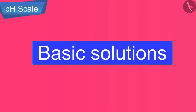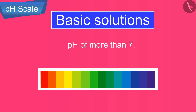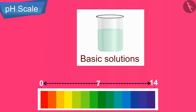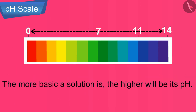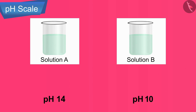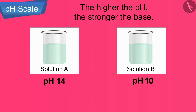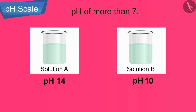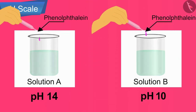Basic solutions have a pH of more than 7. For example, a solution of pH 11 is basic in nature. The more basic a solution is, the higher its pH. For example, a solution of pH 14 is much more basic — and a much stronger base — than a solution of pH 10. So the higher the pH, the stronger the base. All substances with pH greater than 7 are basic and turn red litmus blue, and turn phenolphthalein indicator pink.